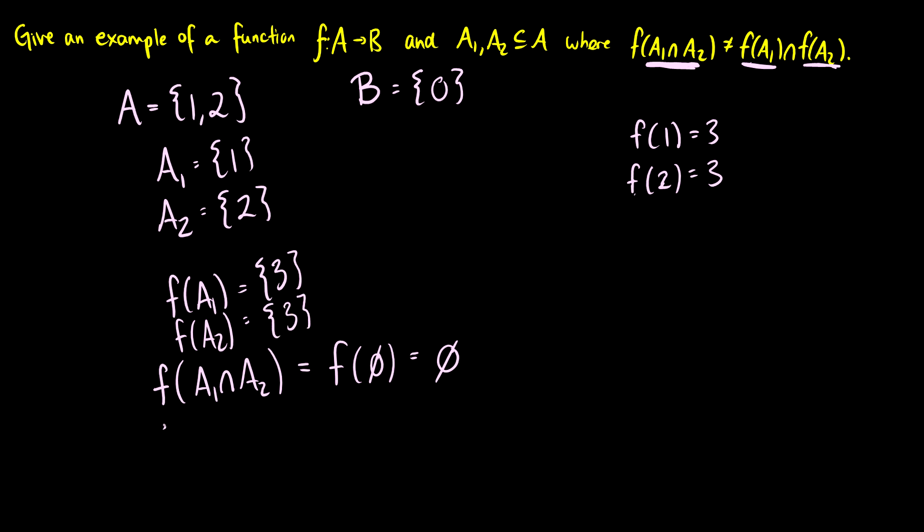So this means that f(A1) ∩ f(A2) is going to be the same thing as the set containing 3, intersection the set containing 3, which is just the set containing 3.